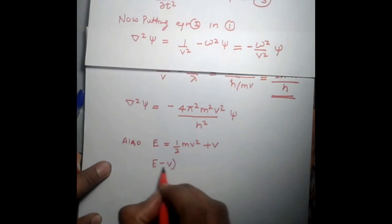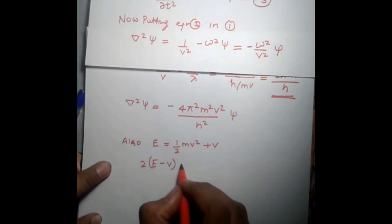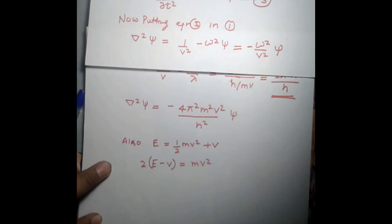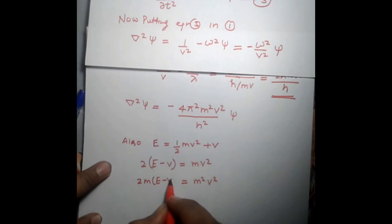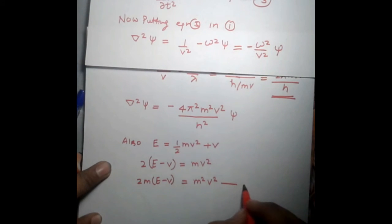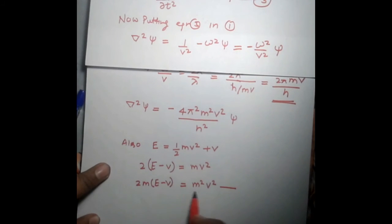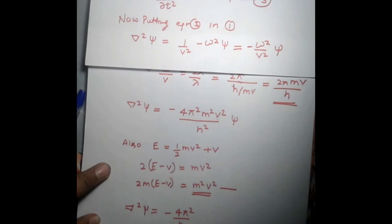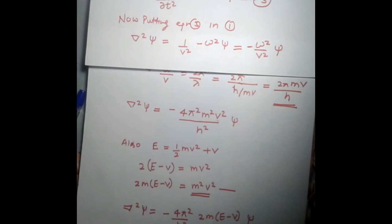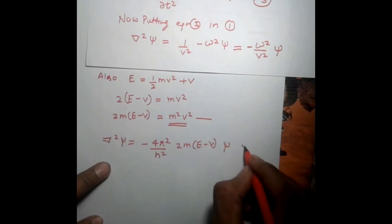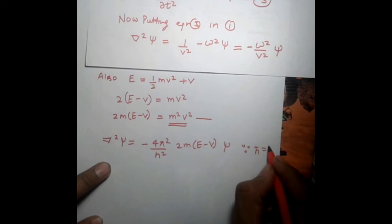From E = KE + V, we get E − V = (1/2)mv², so m²v² = 2m(E − V). Substituting this in, we get: ∇²ψ = −(4π²/h²) · 2m(E − V)ψ. Since ħ = h/(2π), we have h² = 4π²ħ².